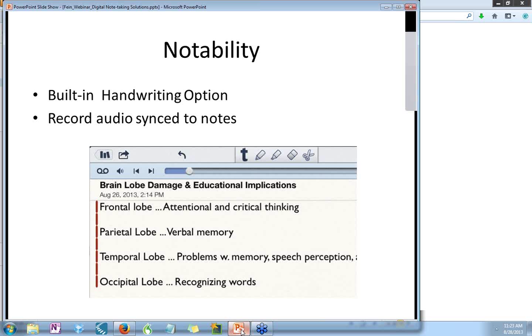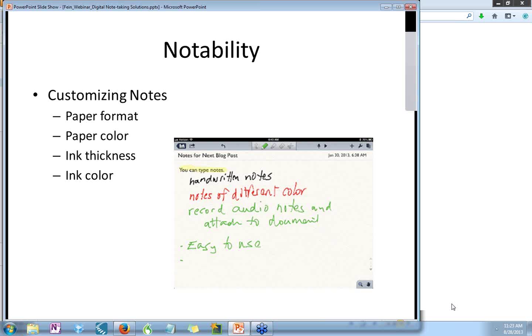Notability stands out for its built-in handwriting option. This option provides you with the possibility of integrating ink sketches and annotations with typed notes. Another valuable feature in Notability is the ability to record audio as you're taking notes. You can see from the diagram here that the recording is synced to your notes for easy reference. So clicking on the little bar to the left will bring up the audio of what was being said at the time that those notes were being recorded. Also, students who prefer handwriting as a way to reinforce information have that option.